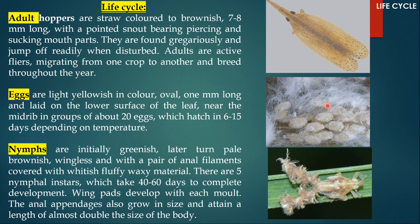Let us talk about the eggs. The eggs are light yellowish in color and you will always find them in a cluster. This cluster will be covered with some hairy material. These eggs are laid near the midrib in groups of about 20 eggs, and you would always find them on the lower surface of the leaf.